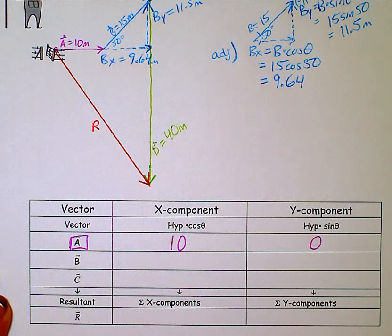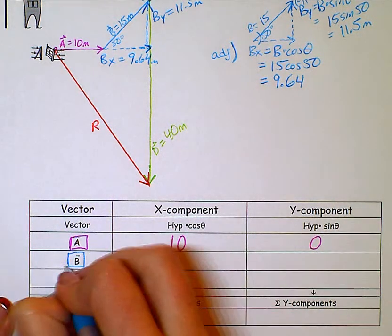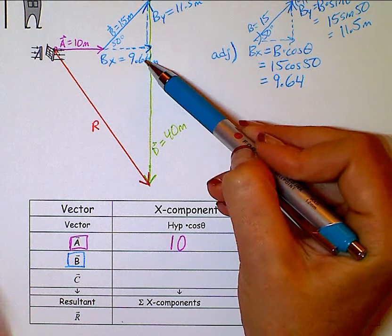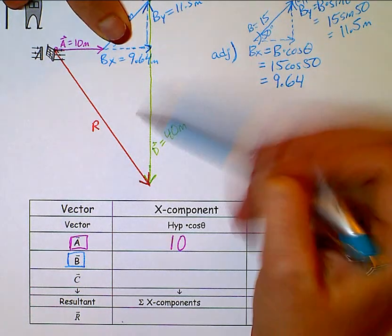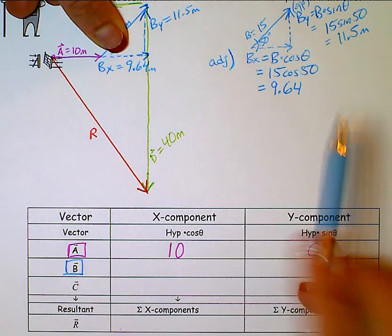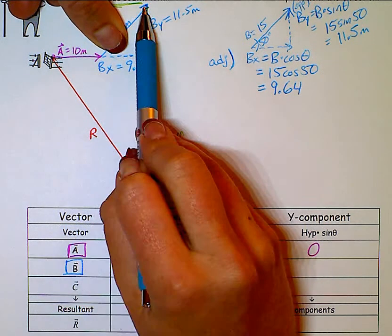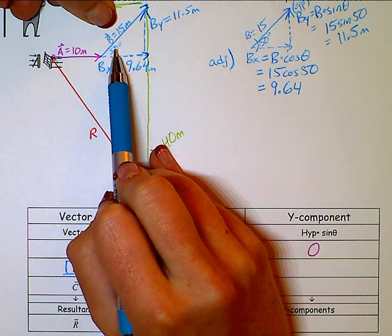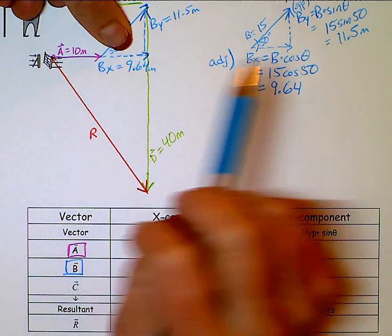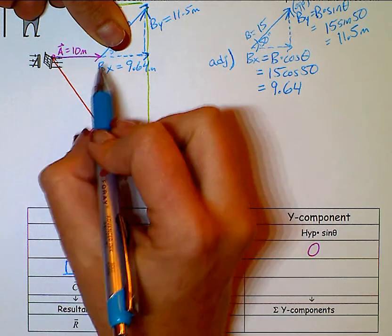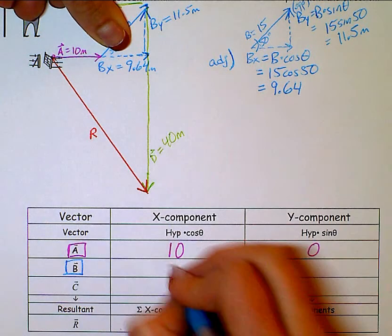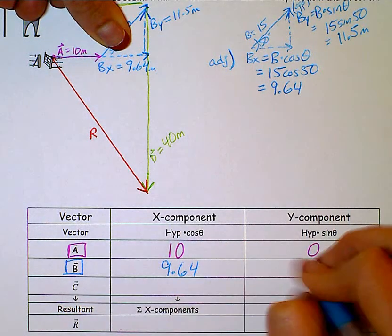B is our diagonal one. Once I break it down into its two parts, you're never going to use this 15 or 50 again. All I care about is the x part and the y part. You'll never put 15 or 50 in any of your answers from here on out. I could erase that if I could. So my x component is 9.64 in the x and a positive 11.5 in the y.